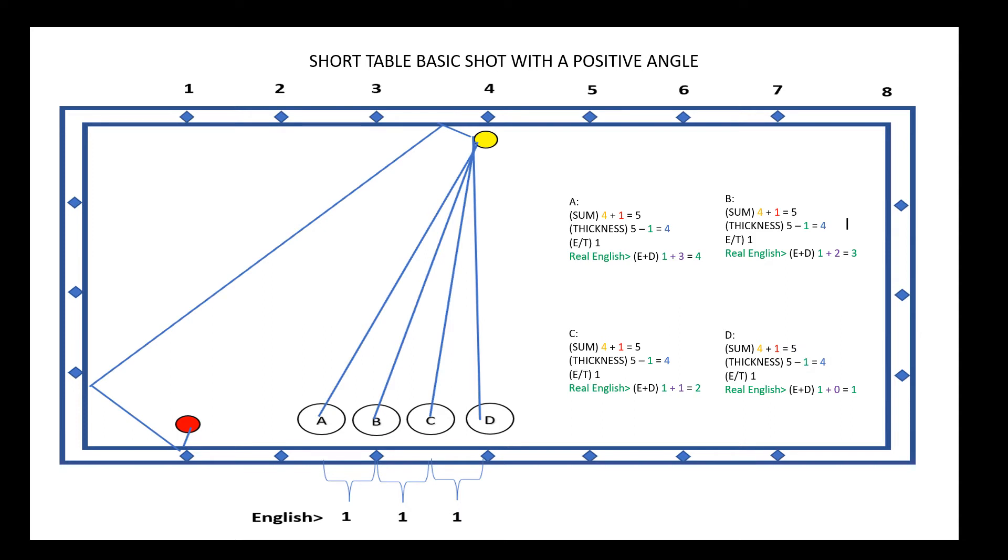Your English will change depending on the placement of the white ball. After the 4th diamond, as your ball angle increases, you calculate your real English by adding 1 for each change in angle.